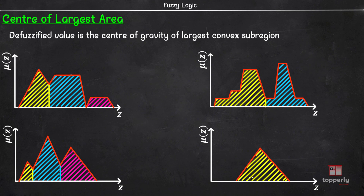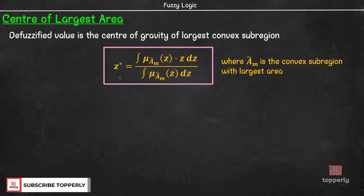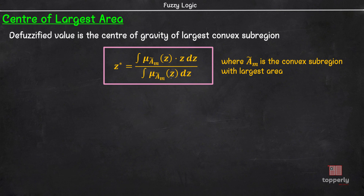Now that you know how to identify the convex subregions, in the centre of largest area method the defuzzified value Z* is simply the centroid of the largest convex subregion. We can express this algebraically as Z* equal to the integral of the membership value of z in fuzzy set a_m into dz, where a_m is the convex subregion with the largest area.